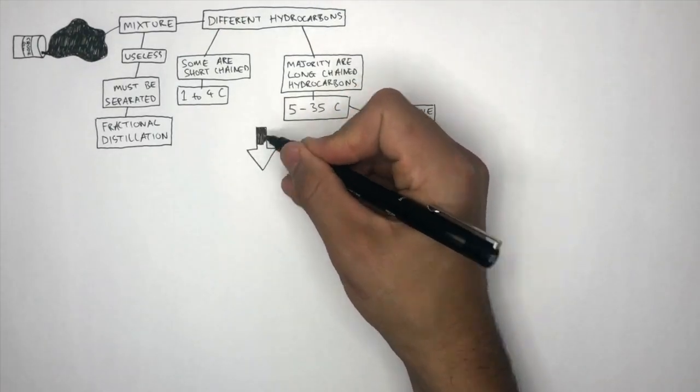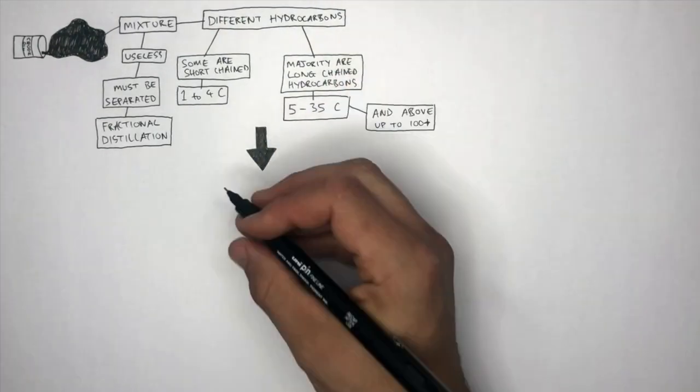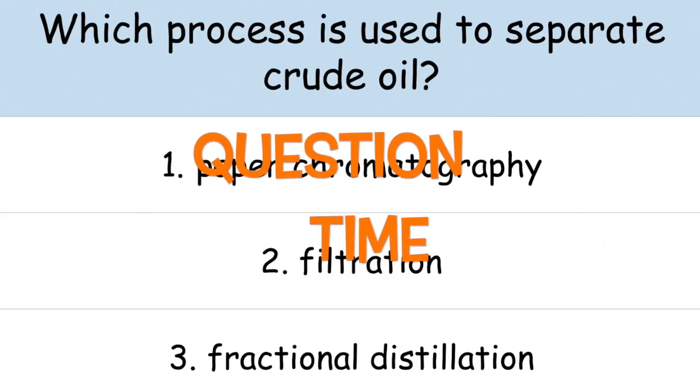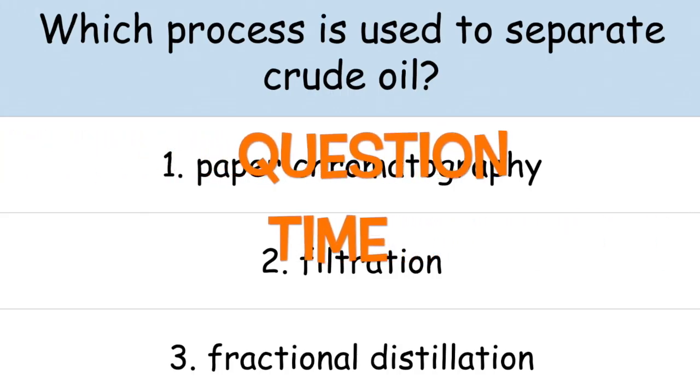It's the length of the carbon chain that determines the different properties of the individual hydrocarbons. It's question time, attempt these questions to check your understanding.